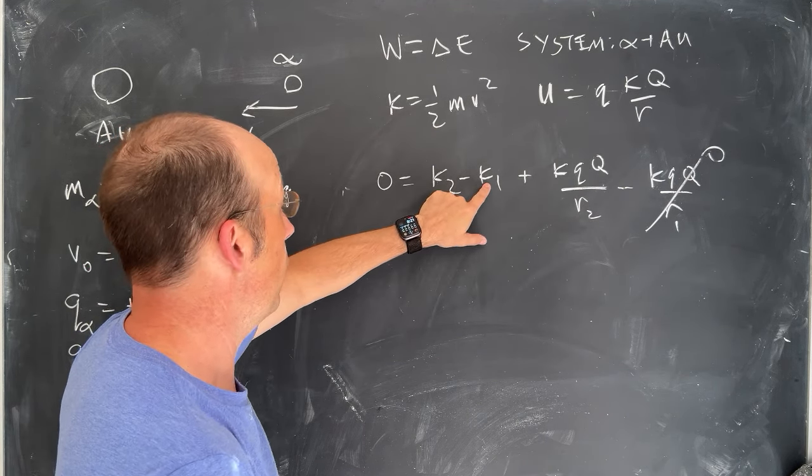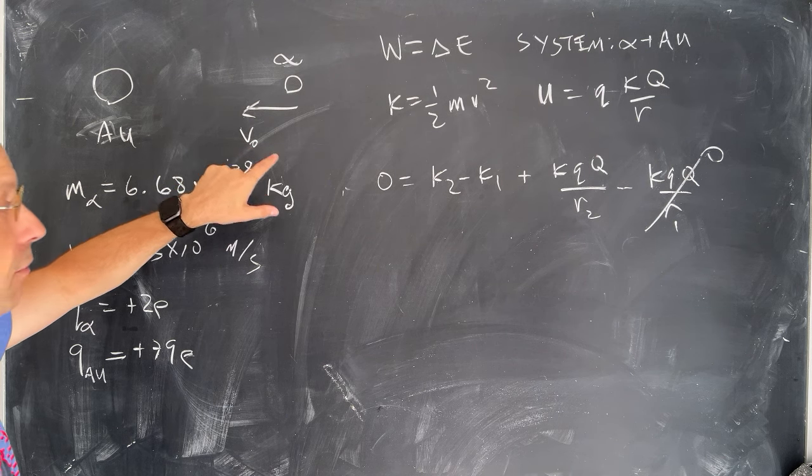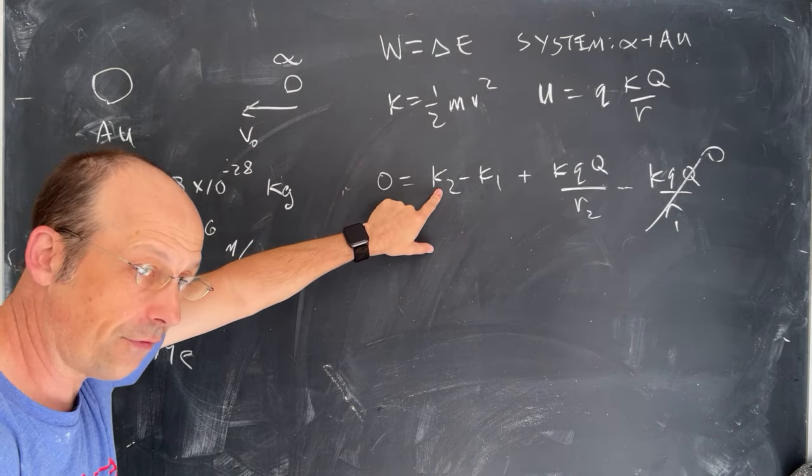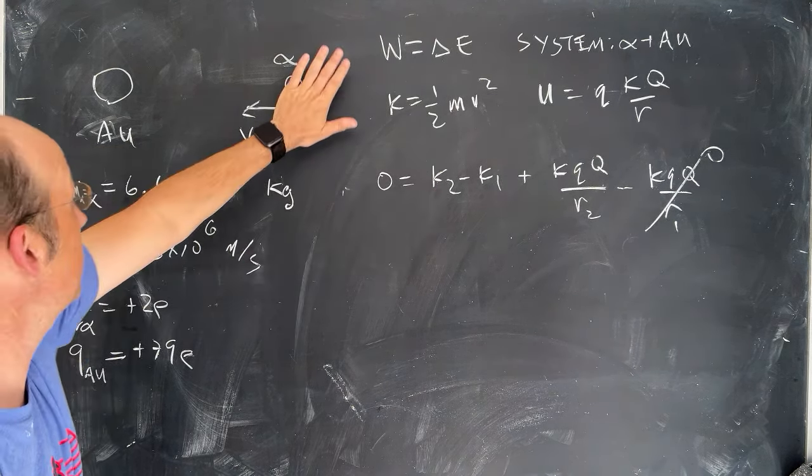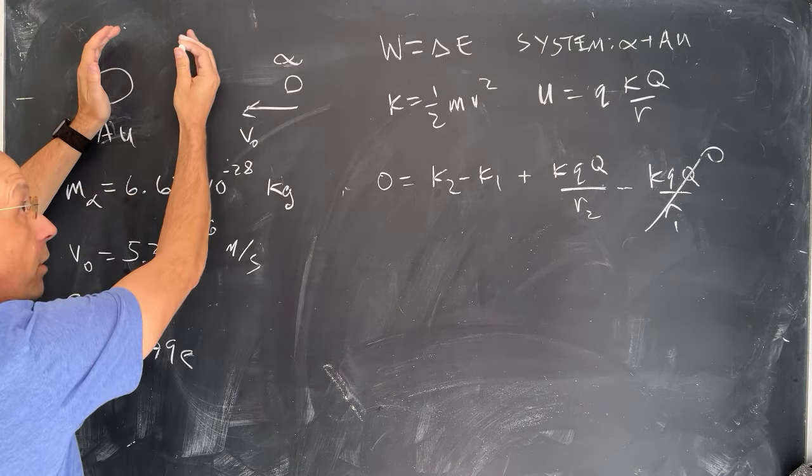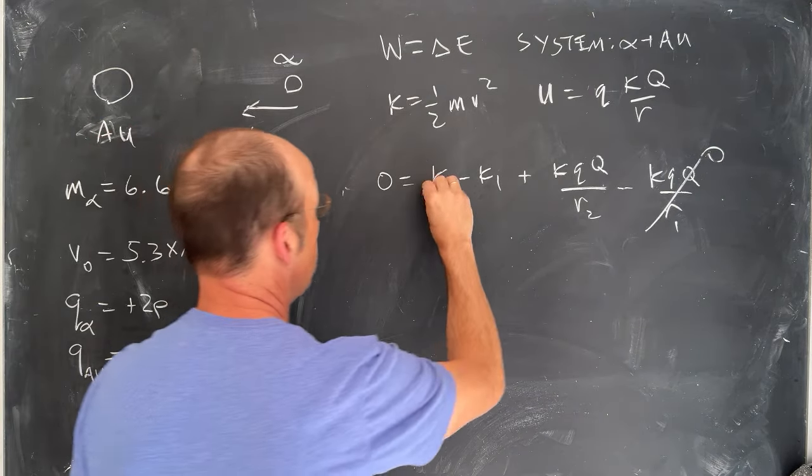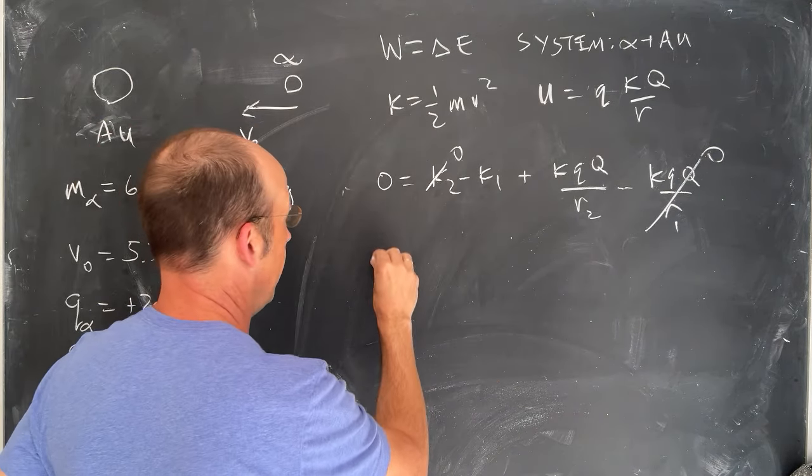Now what about these two terms? Well we know the initial velocity, I called it zero there, and we also know the final velocity, right? Because as this gets closer and closer and closer it's going to slow down and then get repelled. So that point where it's at its closest point, it has zero velocity. So K2 is zero.